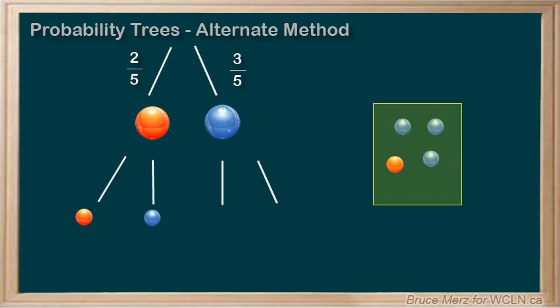Since there are four marbles left, with only one of them being a red one, that means there is a one out of four probability of selecting a red marble second. And with three out of the four marbles being blue, that's a probability of three out of four. Nice! We are almost done our probability tree.